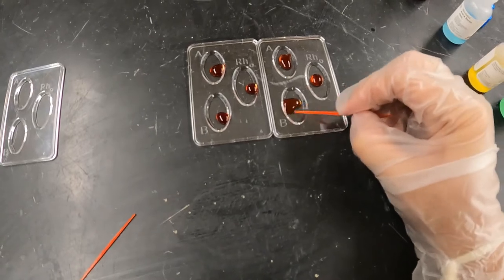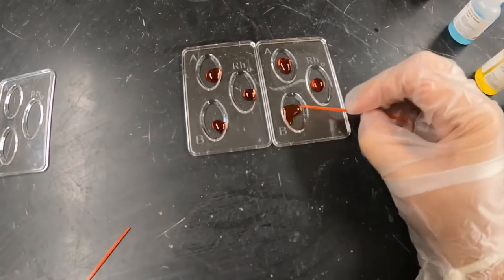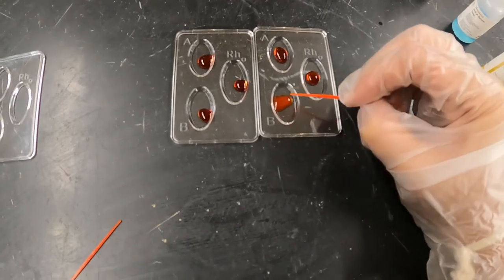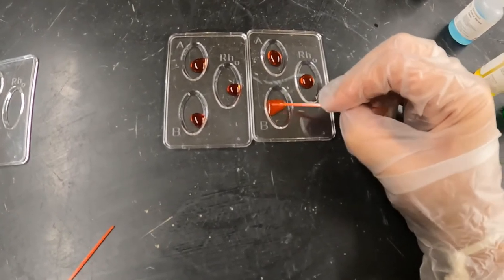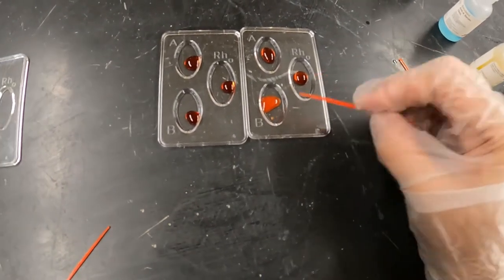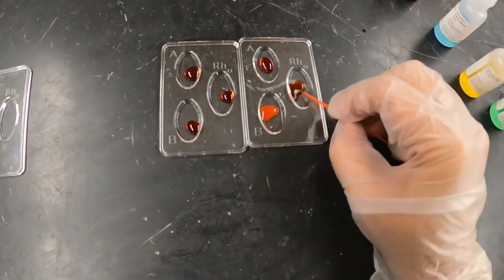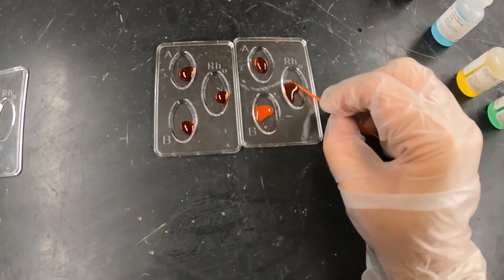Mix it up for B, and you can see for B it's starting to change color, and you're starting to see some of the cells kind of come together.